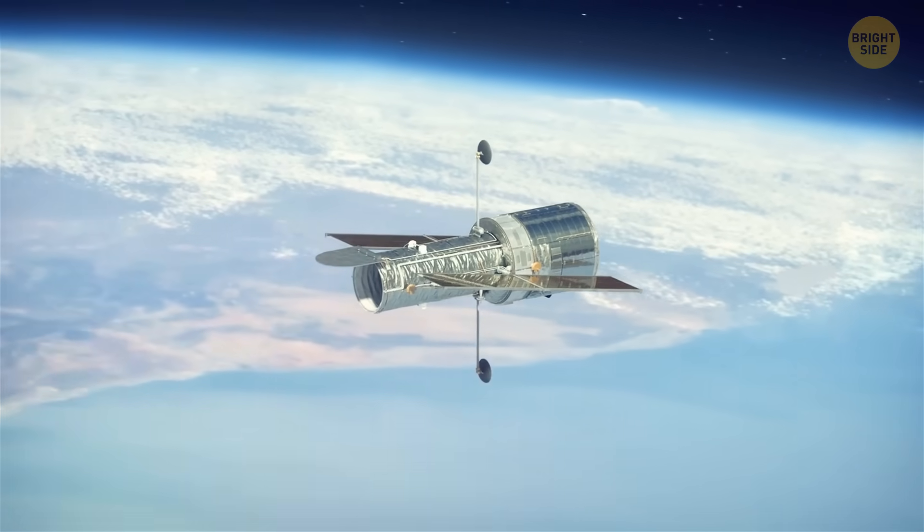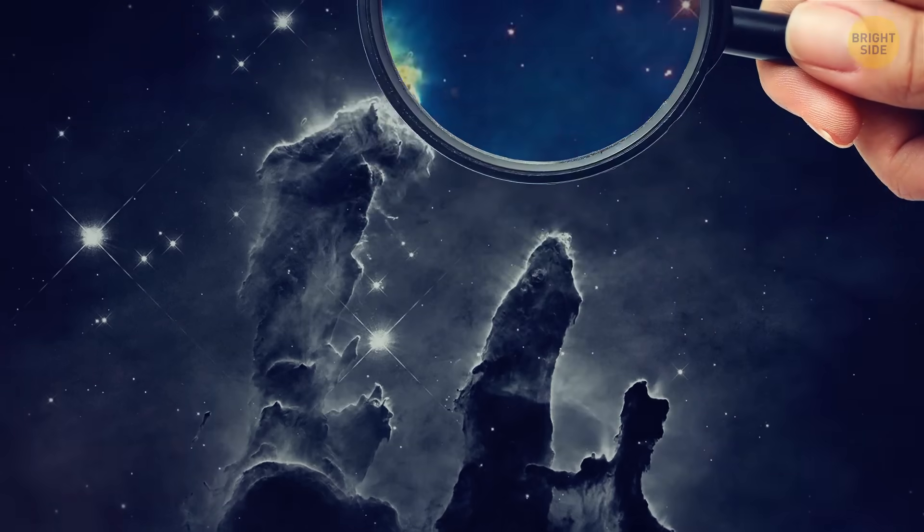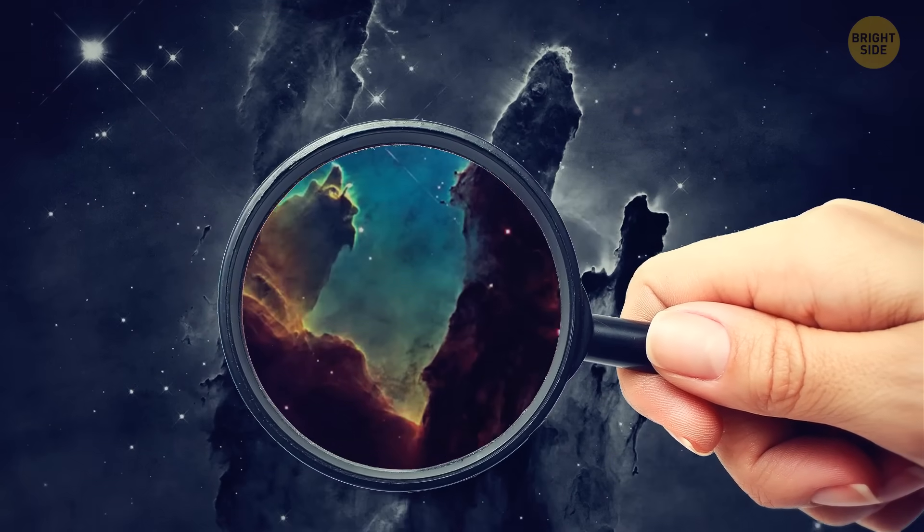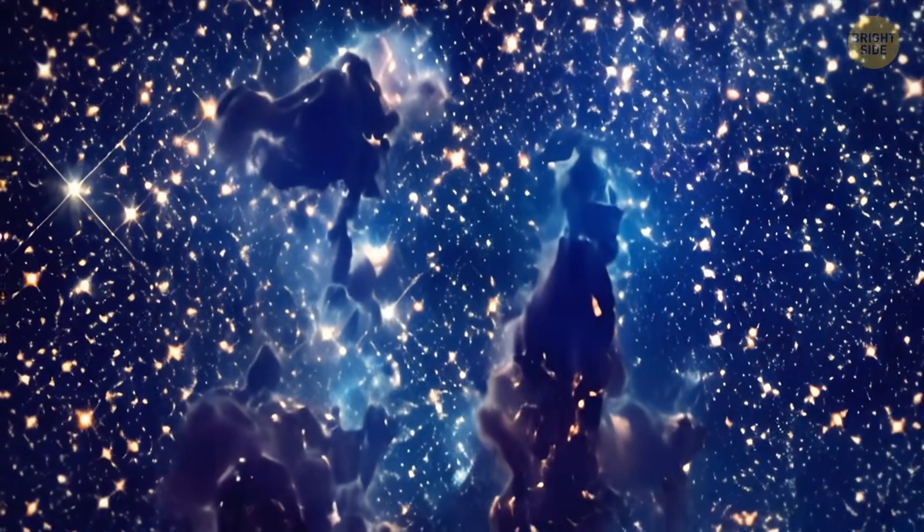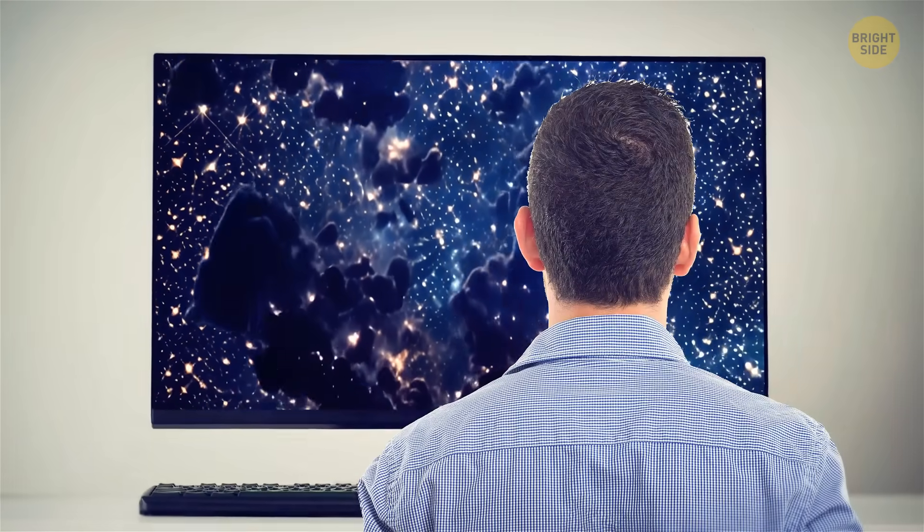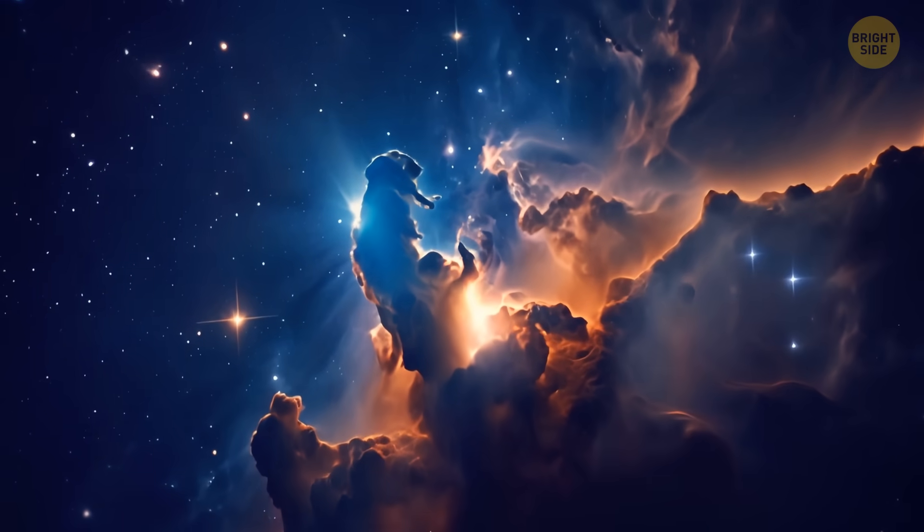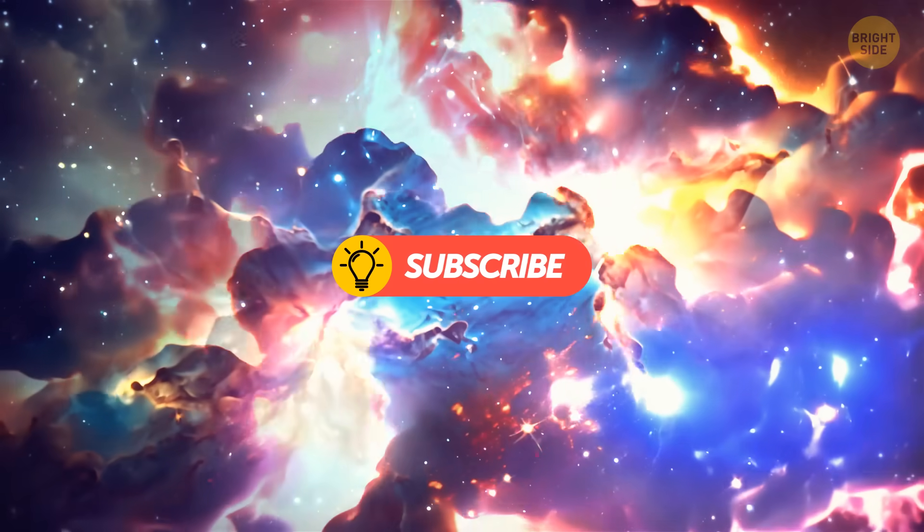Now, I know this ain't the first time the Hubble Telescope's captured this epic sight, but trust me, this is the most mind-blowingly detailed image yet. The Pillars are getting showered with crazy hot ultraviolet light from a bunch of young stars hanging just outside the frame. These stellar superstars are actually causing the towers of dust and gas to gradually get worn away by their gusty winds.